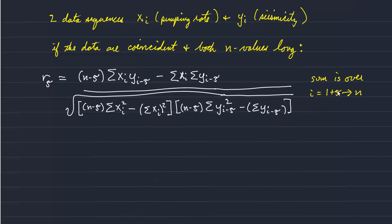So again the equation I just drew out for you applies to the special case in which the two data sequences are coincident. They're measured at the same time and both have the same length. But that's not generally the case.